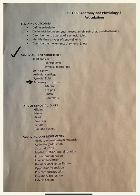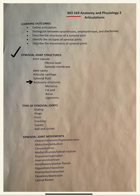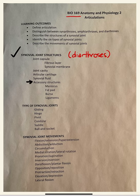This is the first lab for BIO 169, otherwise known as Anatomy and Physiology II. We're going to look at synovial joints, otherwise known as diarthroses, meaning free range of motion.